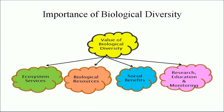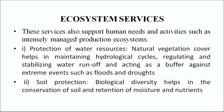The importance of biological diversity can be studied under the following heads: ecosystem services, biological resources, social benefits, and research, education and monitoring. Ecosystem services support human needs and activities. These include protection of water resources — natural vegetation cover helps in maintaining hydrological cycles, regulating and stabilizing water runoff, and acting as a buffer against extreme events such as floods and drought. Clearing large areas of vegetation causes soil erosion, reduces productivity, and often results in flash floods. Root systems allow penetration of water to the subsoil layer and transport mineral nutrients to the surface.